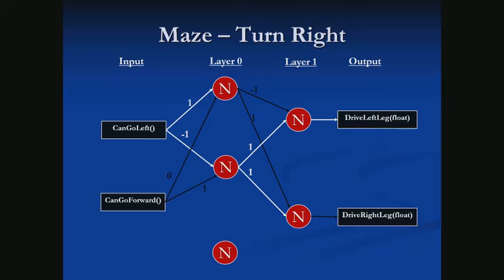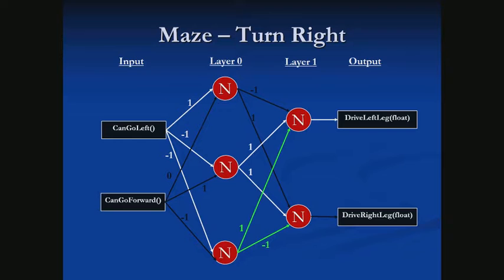The last neuron decides should we turn right. It powers the left leg positively and the right leg negatively to turn right. For inputs, we only want to turn right if we can't go left and can't go forward, so both of those inputs get a negative 1 weight. Now we have a simple neural network that can power an agent to move around a maze, following the left-hand wall.